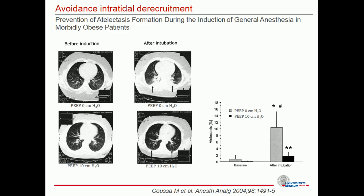Here you can see CT images of 24 patients showing recruitment possible using PEEP. On the left, a CT chest image from a patient before anesthesia induction with differing PEEP values — here 0 and 10 — and the right CT chest image under anesthesia. Microscopically, you see increased atelectasis formation during ventilation without PEEP compared to ventilation with PEEP. The evaluation on the right indicates a significant difference: 10% atelectasis at PEEP 0, and 2% at PEEP 10 after anesthesia induction.